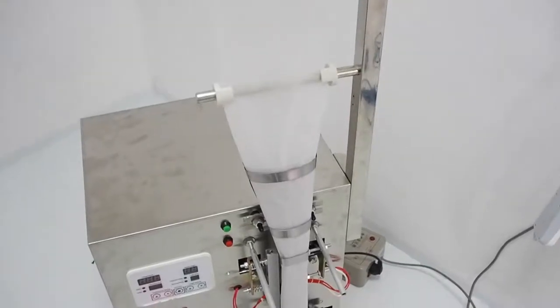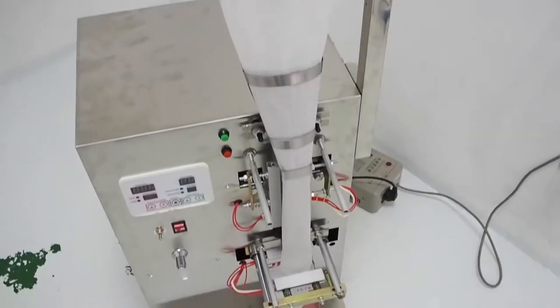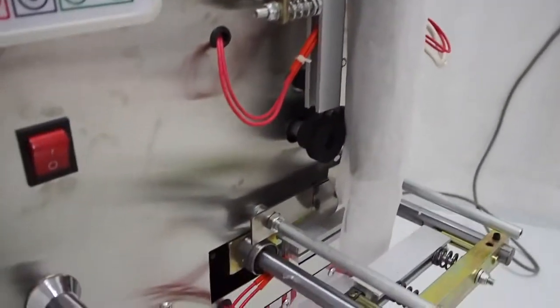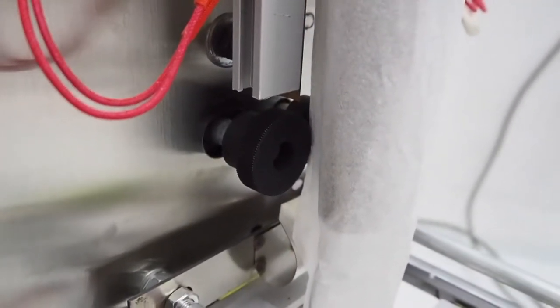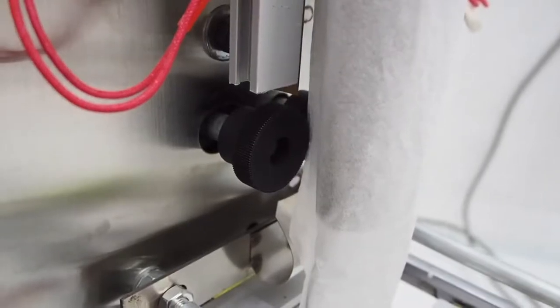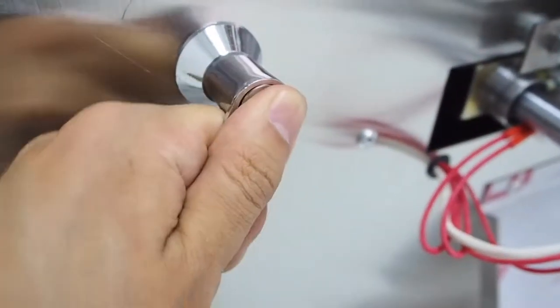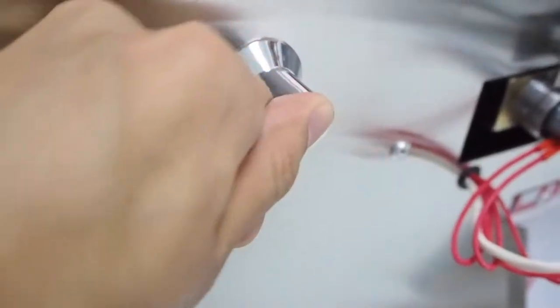Now that we have threaded the film through the bag forming mold, the next thing we need to do is to open the pulling wheel by this handle here. So open, close.